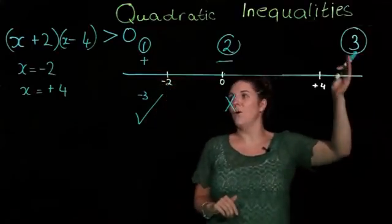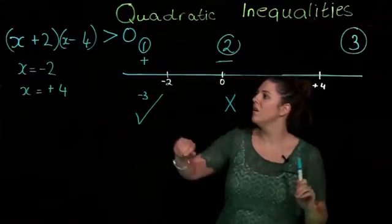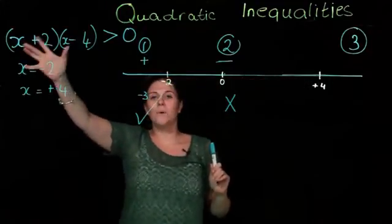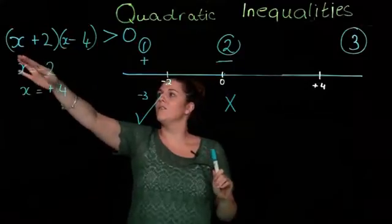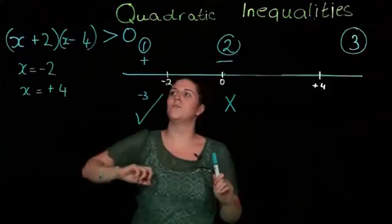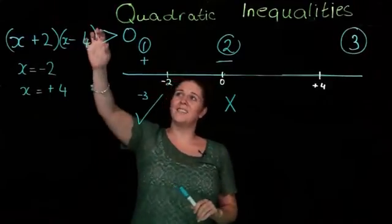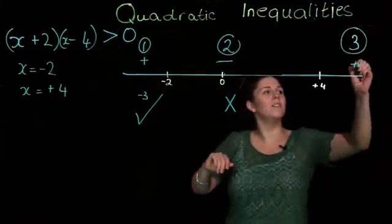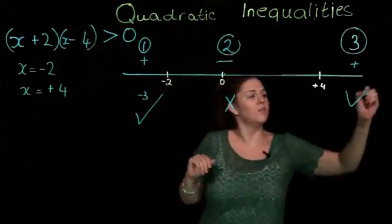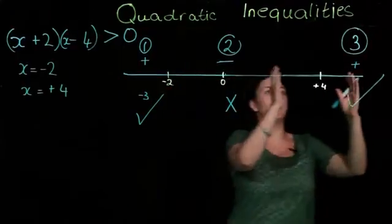For the third region, we want to go greater than 4. Let's try 5. Putting 5 into this, 5 plus 2 is 7, 5 minus 4 is 1. 7 times 1 is 7, which is greater than 0. This is positive, and this works.